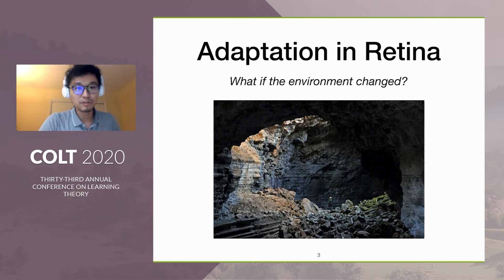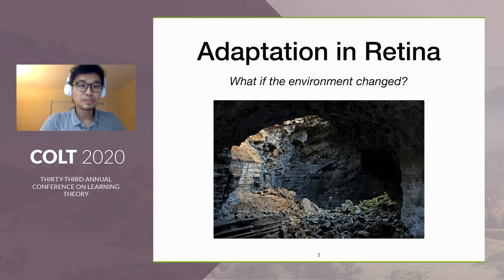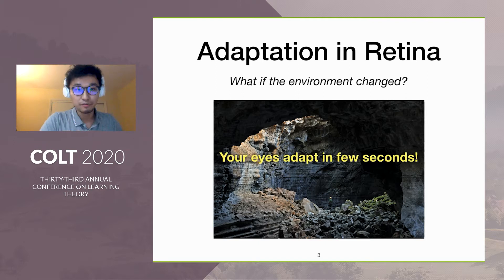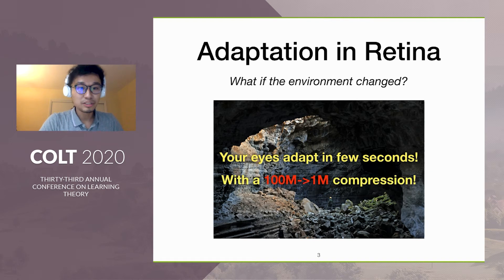The environment changes a lot from bright to dark. However, from experience, we know that your eyes adapt in a few seconds. While there's a huge compression in the retina, as we saw before, it is very fascinating how a retina can do this adaptation so efficiently.